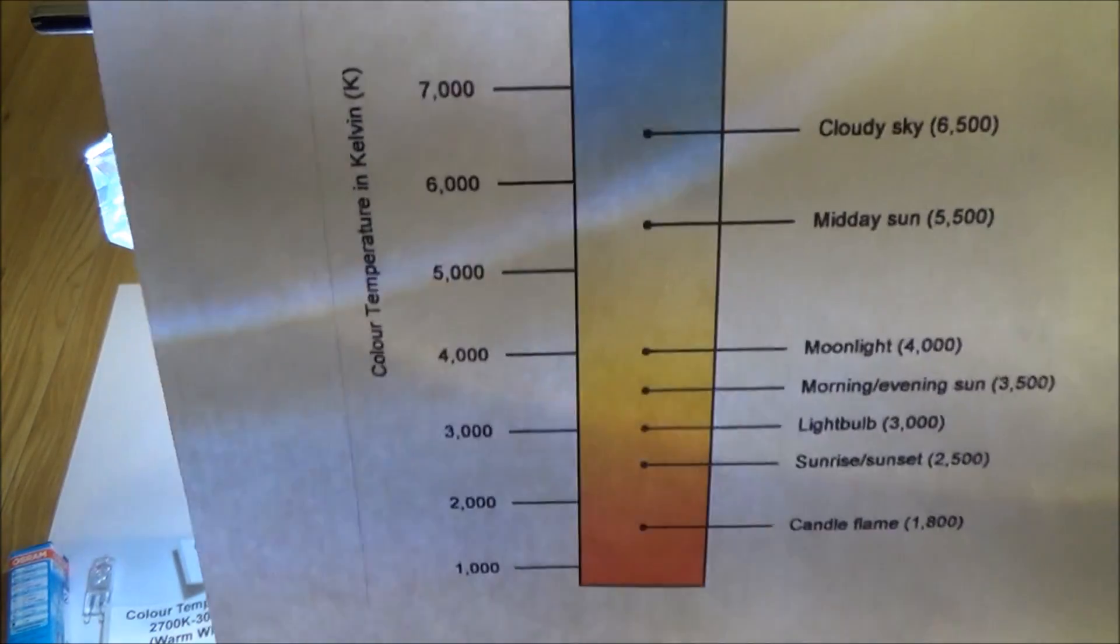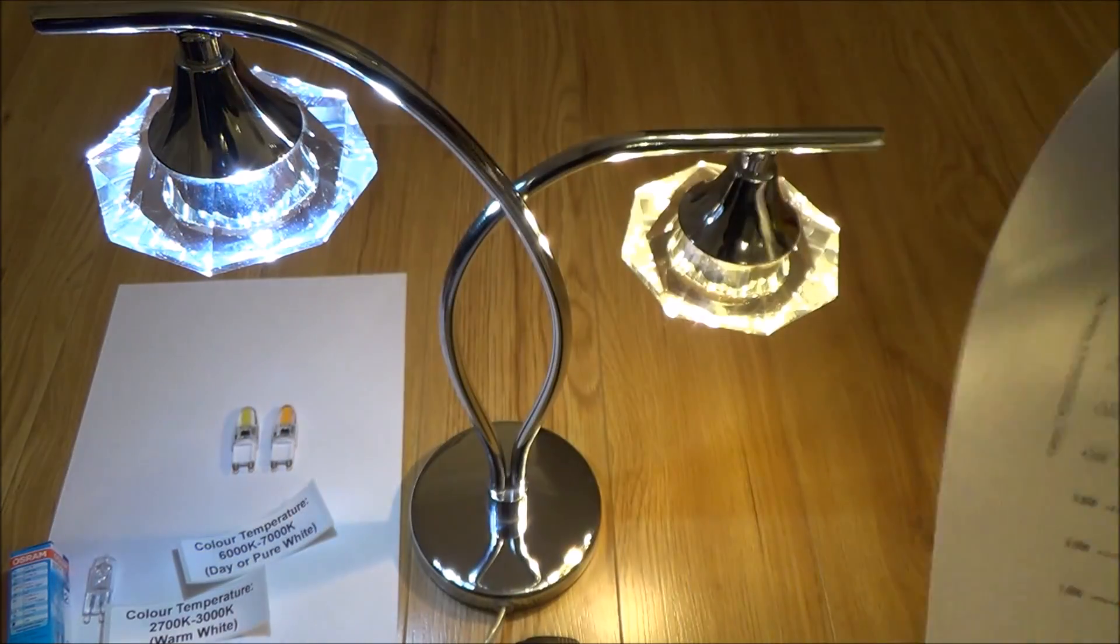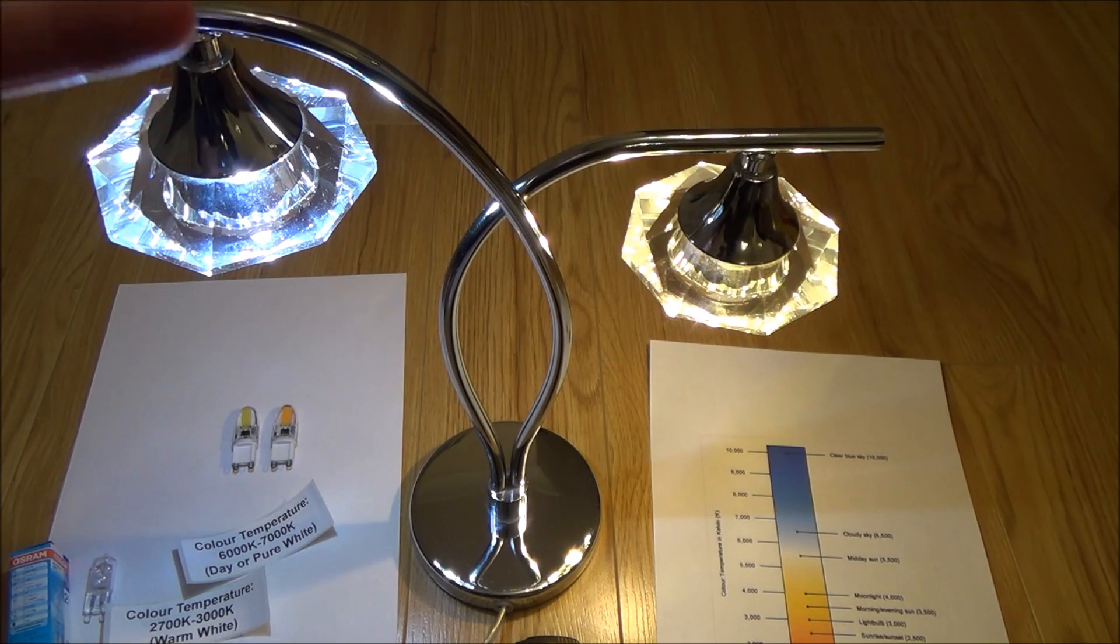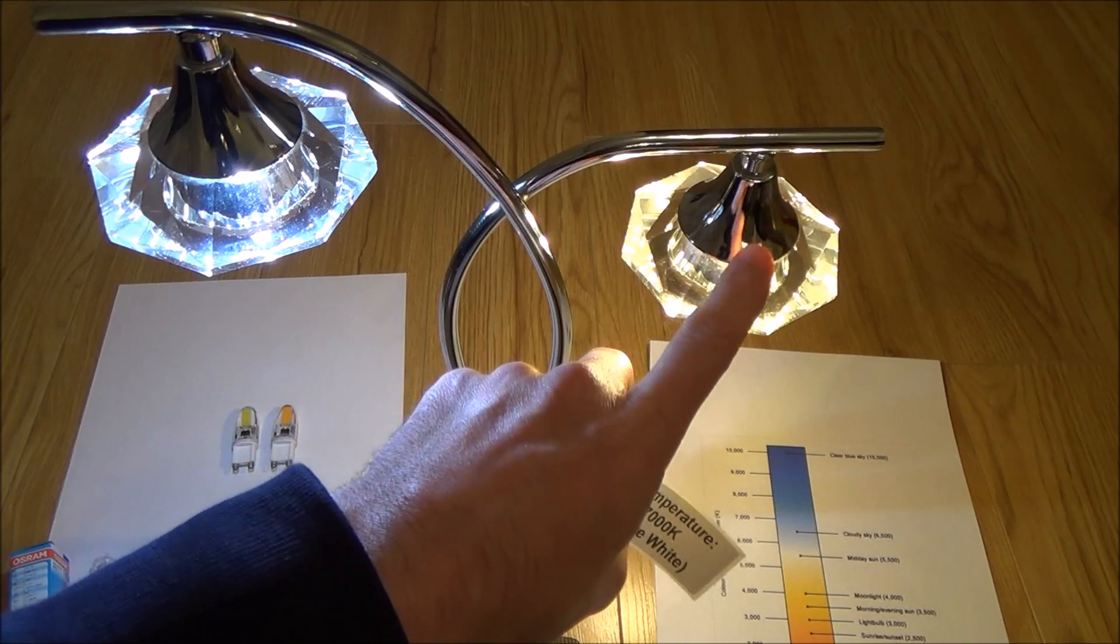So go by the K numbers and then you will definitely get the color or near enough the color that you want because remember there's going to be a variation from manufacturer to manufacturer. All right, I'm just going to show you now a room with this particular light in and then I'm going to show you the same room with these lights in.